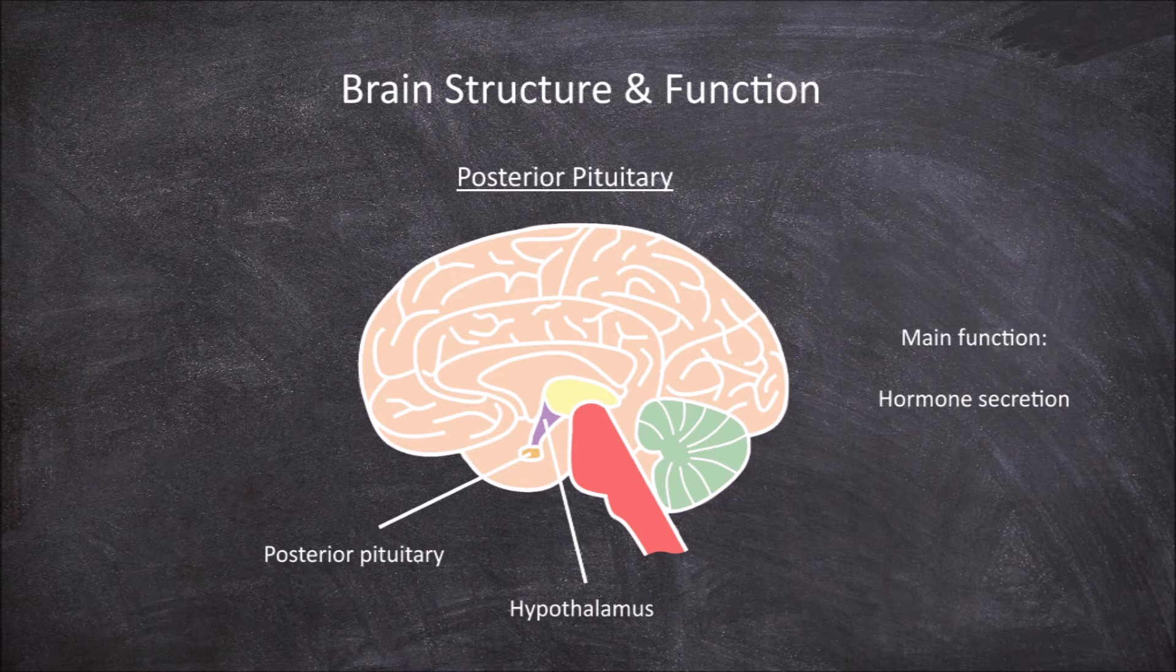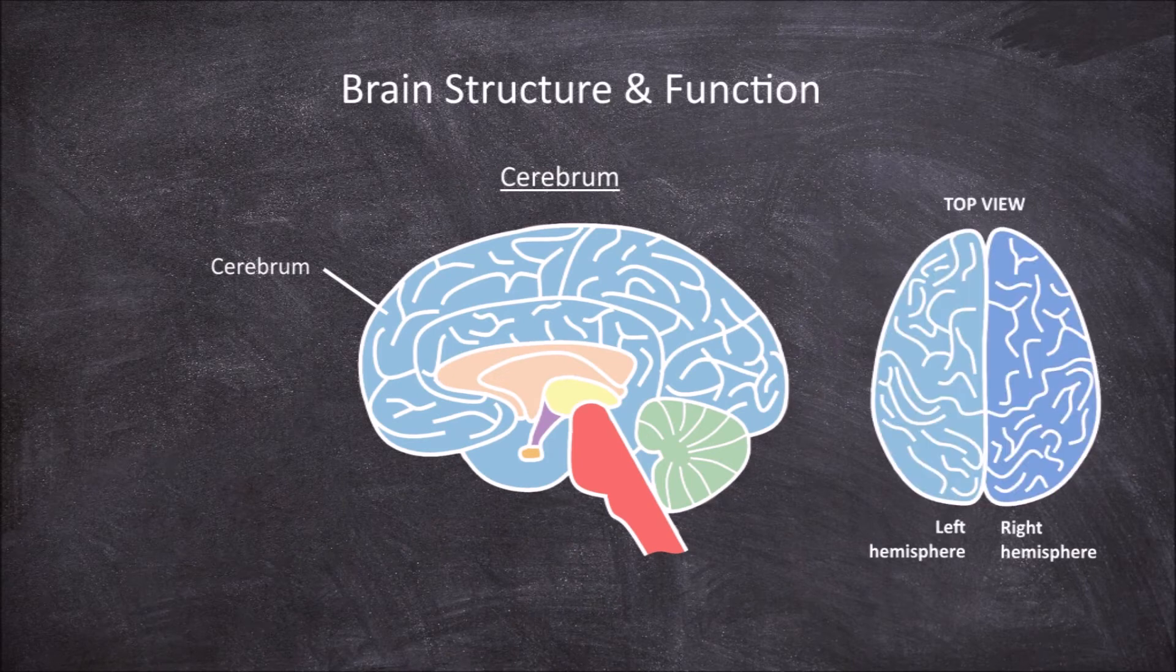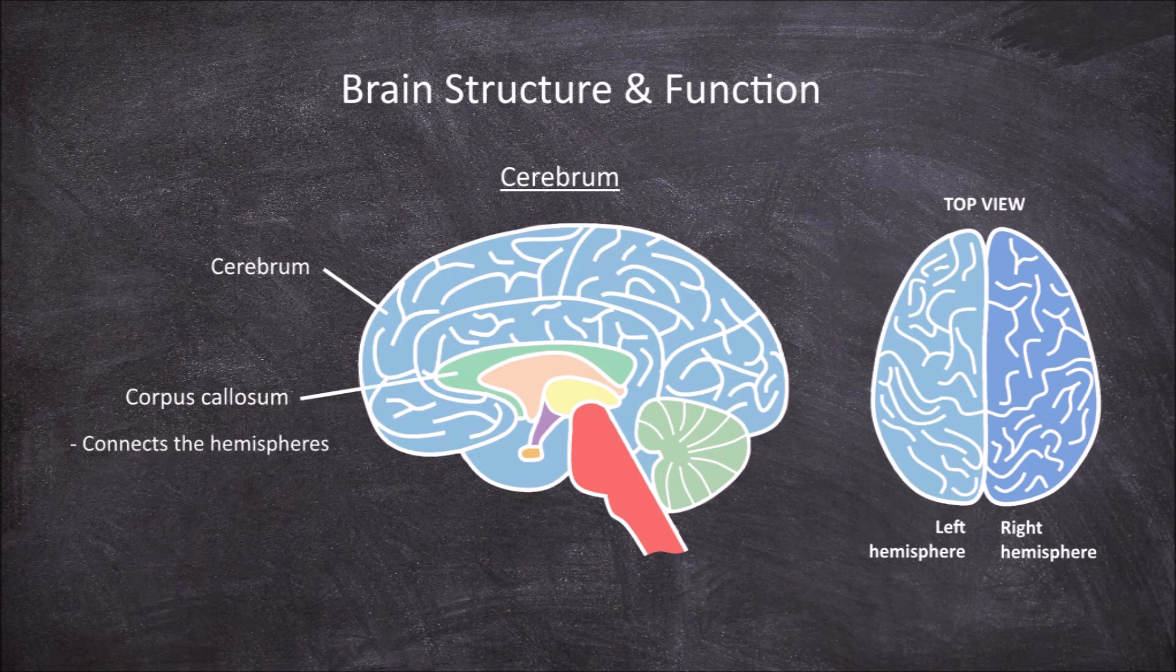The next part of the brain is the cerebrum. The cerebrum is made up of two hemispheres, the left and right hemispheres. These two hemispheres are connected by the corpus callosum, which functions in connecting the two hemispheres so communication between them can occur. Below the corpus callosum and around the thalamus is the basal ganglia.